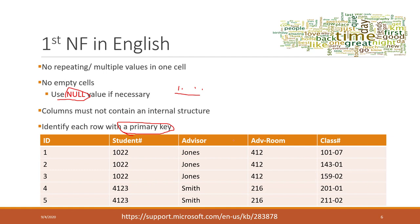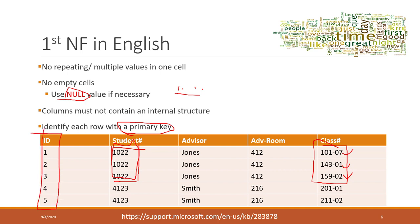Here is a solution — a table that does not violate the first normalization rules. For the first student, we create three rows, and in each single row we have one class information. We don't have multiple values, we don't have internal structure, we don't have empty cells. And we have a primary key — in this case, because the student ID repeats multiple times, the primary key will be the ID column.